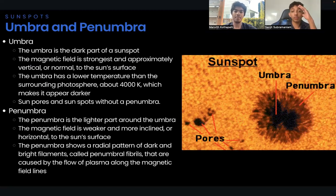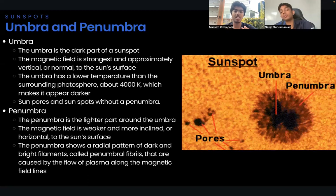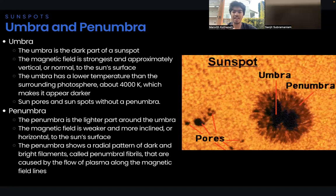Now, let's talk about the penumbra. The penumbra is a lighter part of the umbra where the magnetic field is weaker or more inclined or horizontal. The temperature of the penumbra is around 5500 Kelvin, which makes it appear brighter. The penumbra shows a radial pattern of dark and bright filaments called penumbra fibrils that are caused by the flow of plasma along the magnetic field lines.